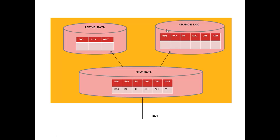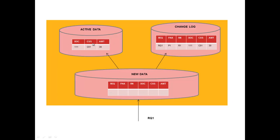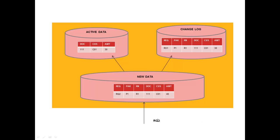Let's see how the overwriting functionality works. With Request 1, data first reaches the new data table (activation queue). After activation, it is sent to the active data table and the change log table, and the new data table becomes empty. When a second request arrives with updated data — for example, the amount value in the active data table is 30 but the new request has 40 as the latest value — activating the DSO again will overwrite the previous value with the latest value in the active data table.